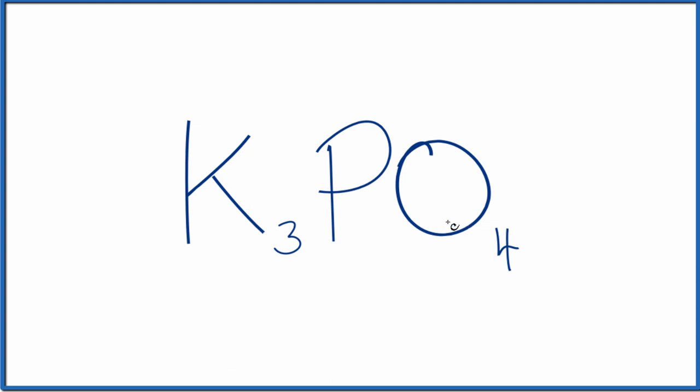So we have a metal and a nonmetal. We need to think about charges. Potassium is in group one on the periodic table. It has a one-plus ionic charge. Each one of these has a one-plus ionic charge.